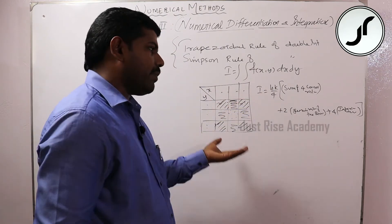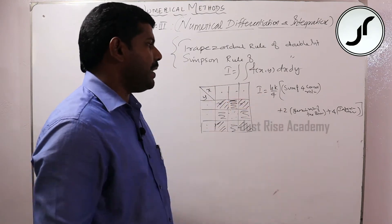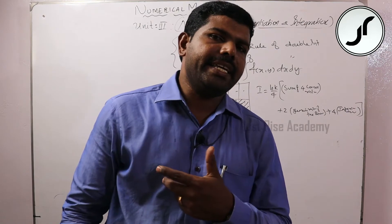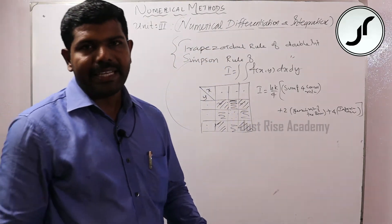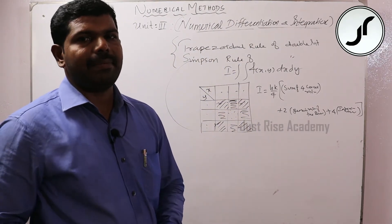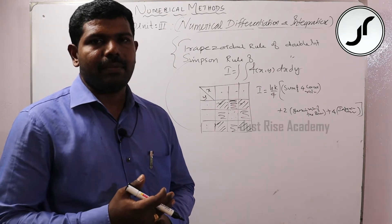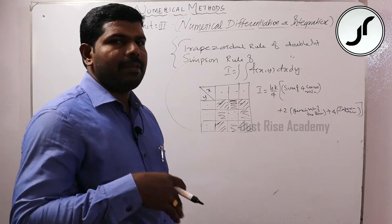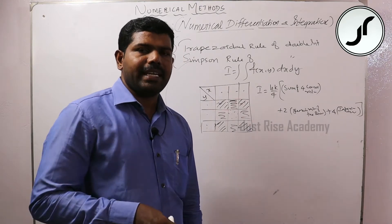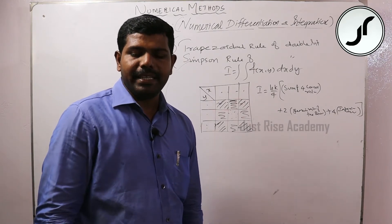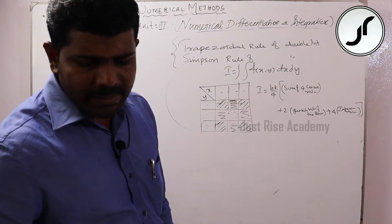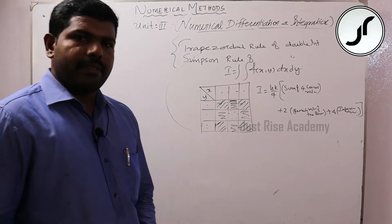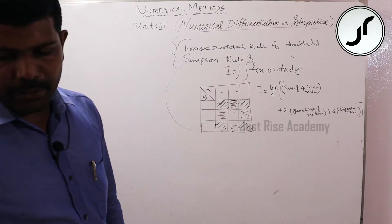For numerical data on a double integration, we apply the formula. For the Simpson's rule of double integral, we can apply the 1, 4, 1 pattern as well as the 1, 4, 2, 4, 1 pattern — that is the easier formula. Otherwise it is very difficult to study the formula. We will go to one problem from the Trapezoidal rule, and also one problem combining both Simpson's and Trapezoidal rule together.